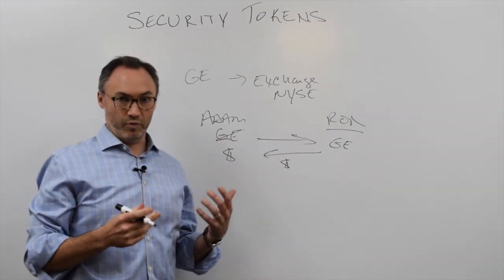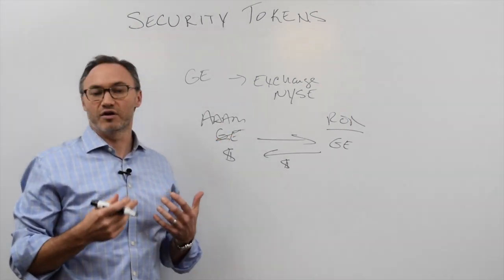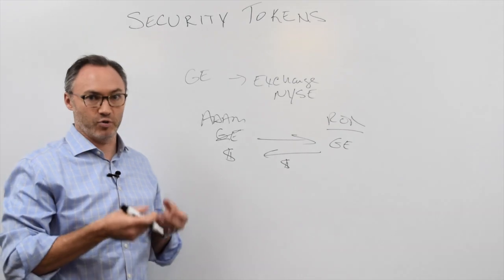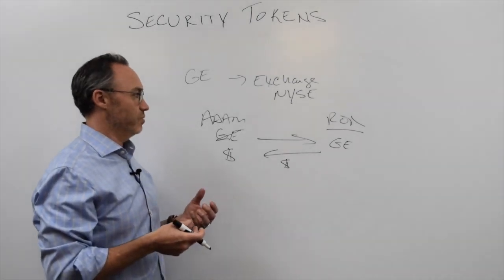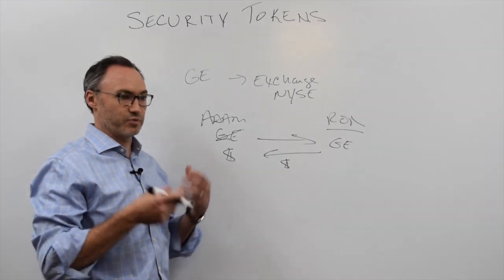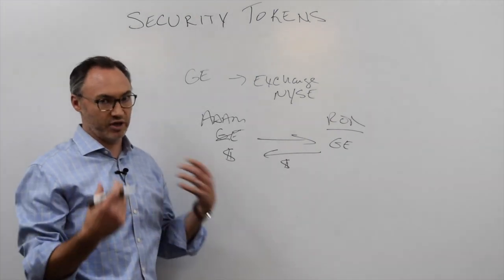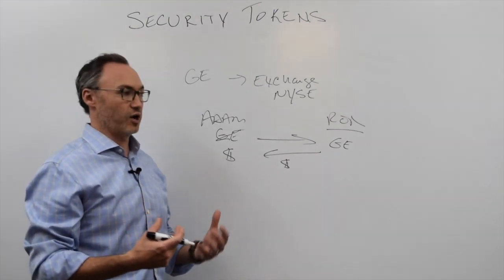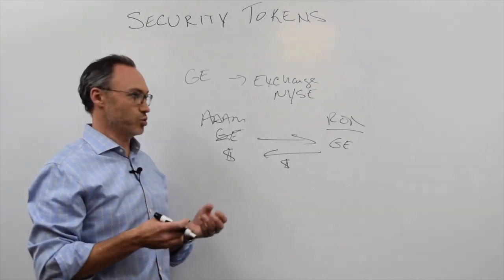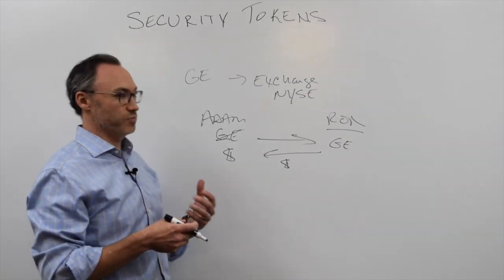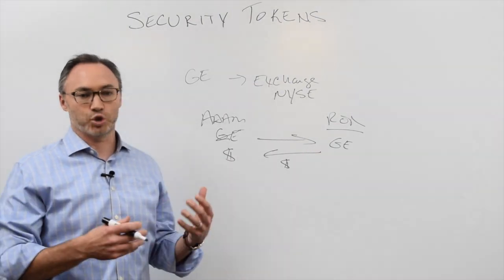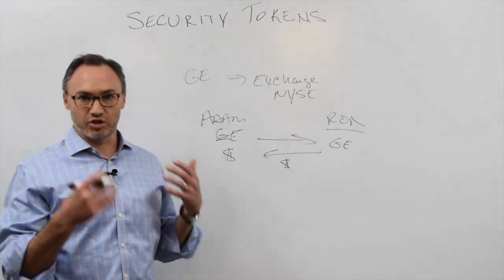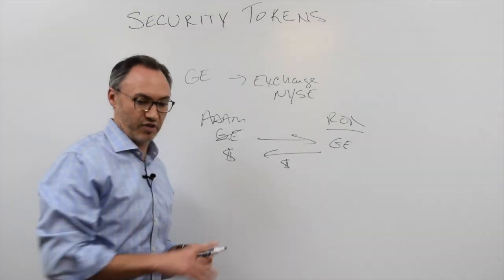And this is what happens with public companies. They're not denoted necessarily electronically. At some point, there were actually stock certificates for GE, but they're kept track of at a transfer agent. They're probably kept track of digitally, but they're tracked and stored with a transfer agent. But that's not a token. That's just an electronic, almost like a spreadsheet or database that keeps track of that.